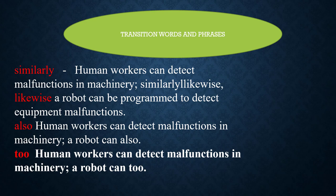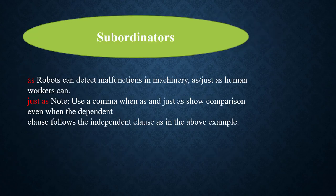Subordinators for comparison: 'as' and 'just as' — for example, 'Robots can detect malfunctions in machinery, just as human workers can.' Note: use a comma when 'as' and 'just as' show comparison, even when the dependent clause follows the independent clause.